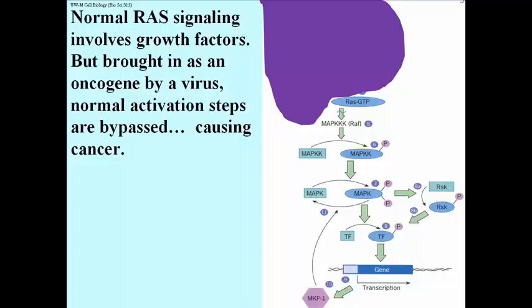In other words, cells bypass normal controls on RAS function and maintain RAS GTP at abnormally high levels.